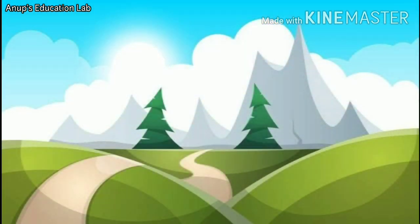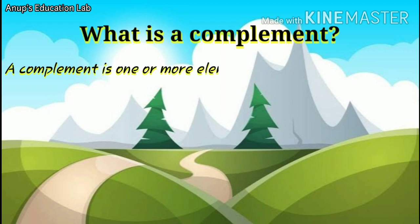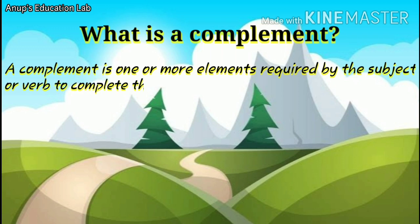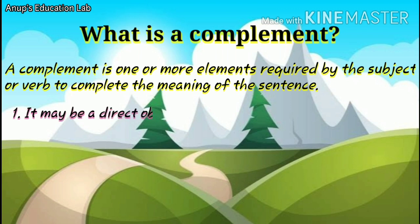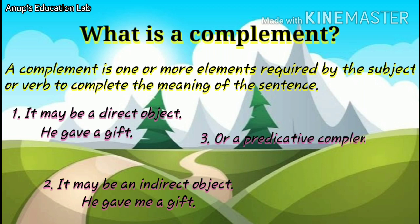Let us now try to understand complement. What is a complement? A complement is one or more elements required by the subject or verb to complete the meaning of the sentence. It may be a direct object. Example: He gave a gift. It may be an indirect object. Example: He gave me a gift. Or, a predicative complement. He is good.